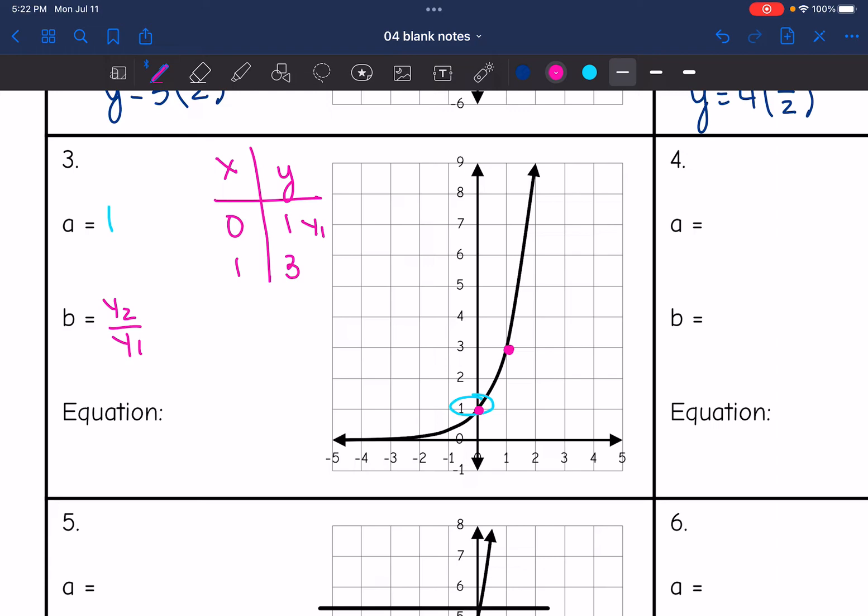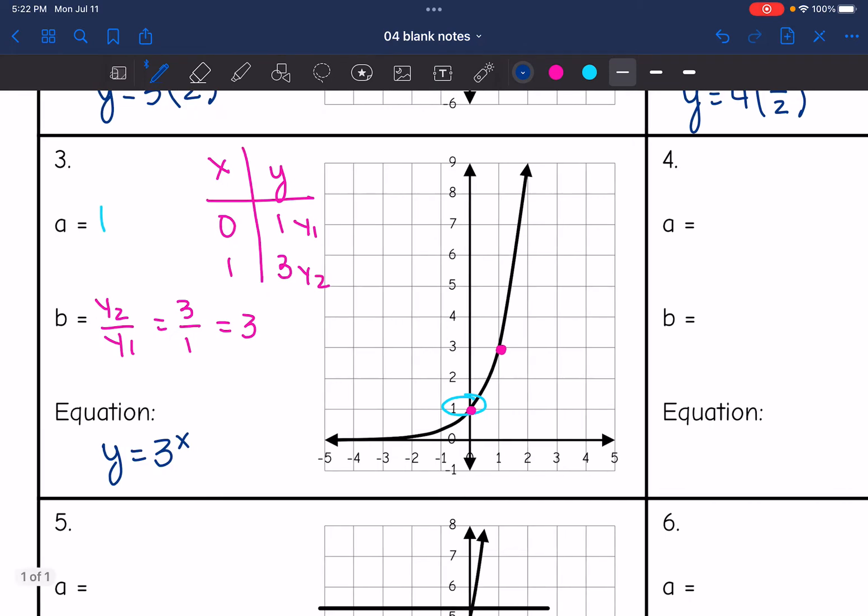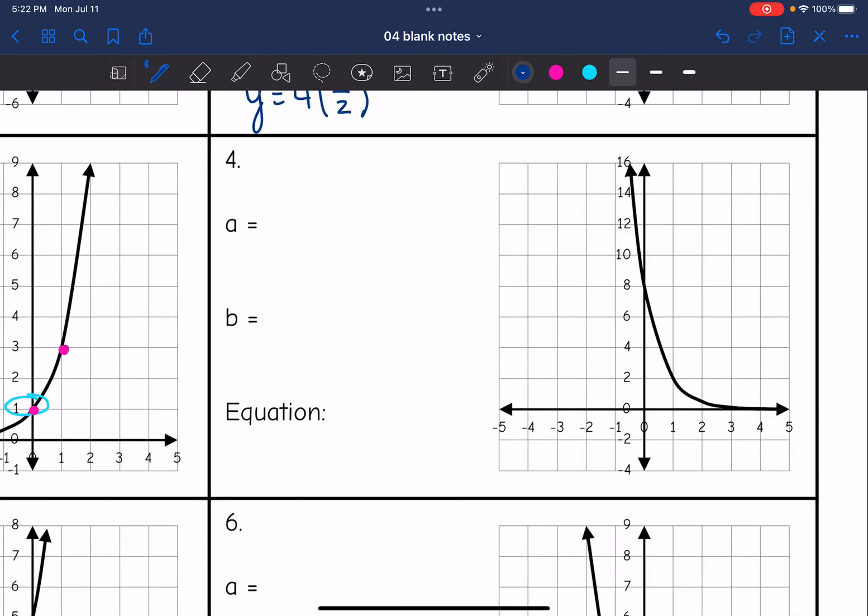So y1 is 1, and y2 is 3. So I will do 3 over 1 to get the common ratio, which is just 3. So my equation where a is 1 and b is 3 would just be y equals 3 to the x. When the y-intercept is 1, we don't have to put 1 times 3.